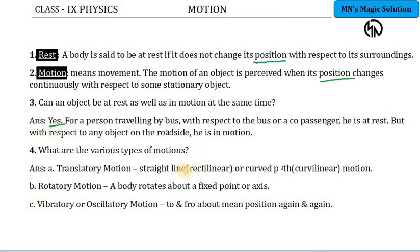What are the various types of motions? Straight line motion, curved motion or circular motion, rotational motion, vibrational motion. Vibration is otherwise called oscillatory motion. These are the various types of motions.